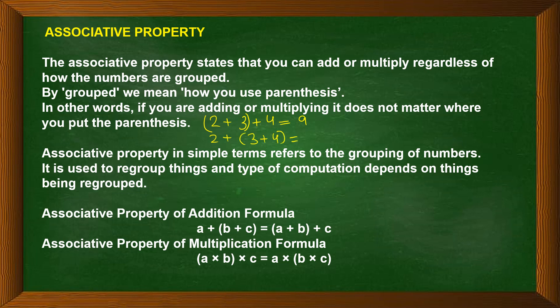Now if I put the bracket as 2 plus (3 plus 4), that gives 2 plus 7, which is also 9. Regardless of where the brackets are placed, the answer is the same. For multiplication, (2 into 3) into 4 equals 6 into 4 equals 24, and 2 into (3 into 4) equals 2 into 12 equals 24. This is not true for subtraction or division.